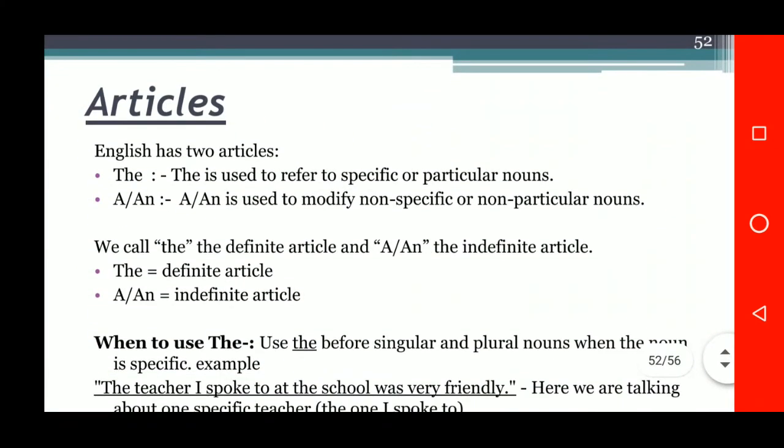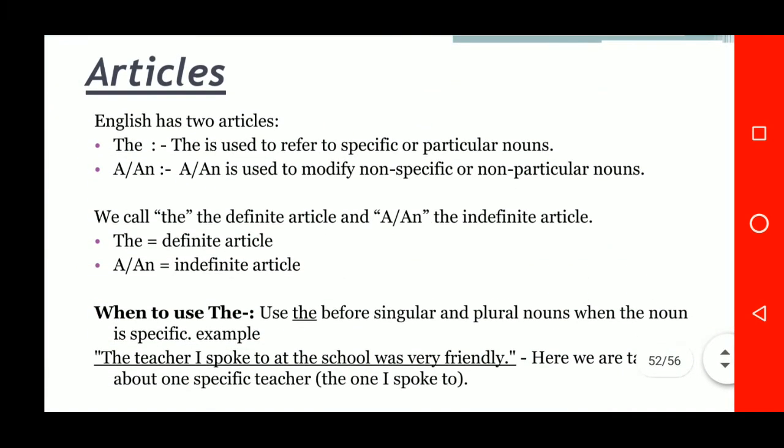Next are articles. English has two articles. 'The' is used to refer to specific or particular nouns — we call it the definite article. 'A' or 'An' is used to modify non-specific or non-particular nouns — we call these the indefinite articles.